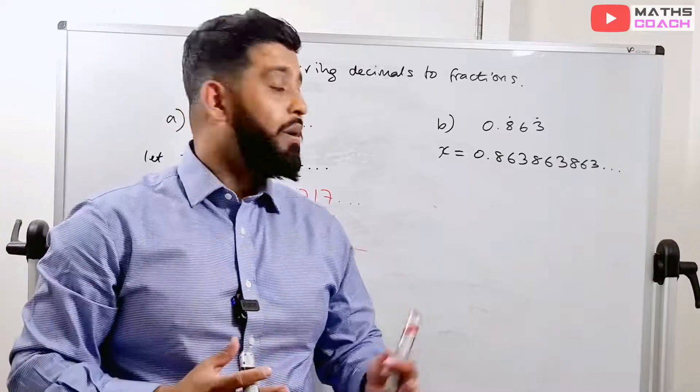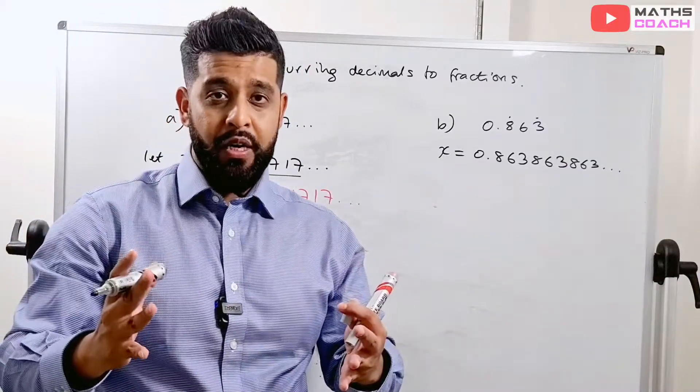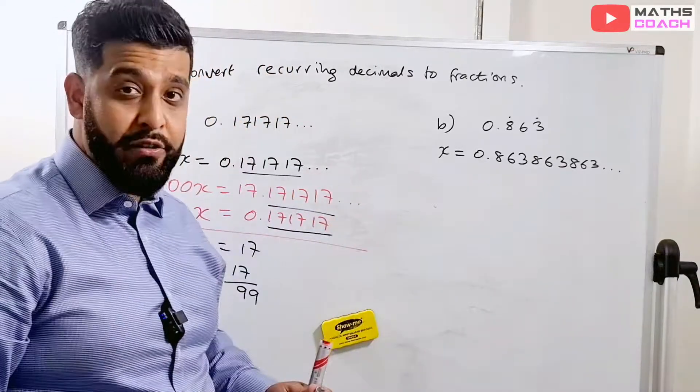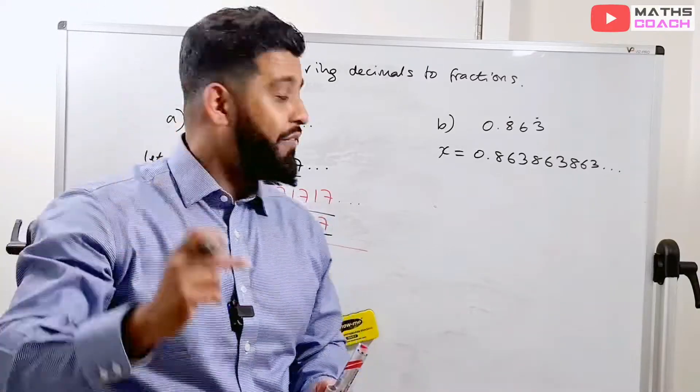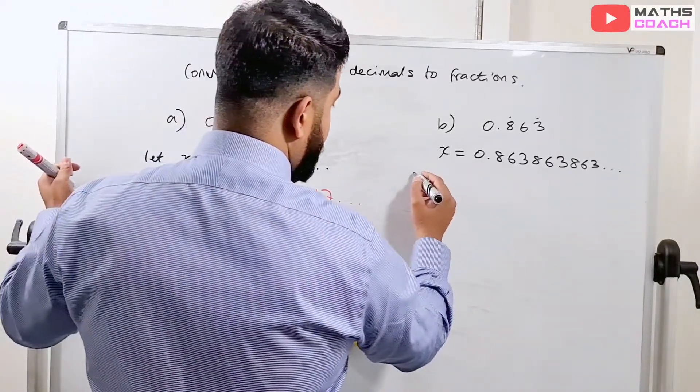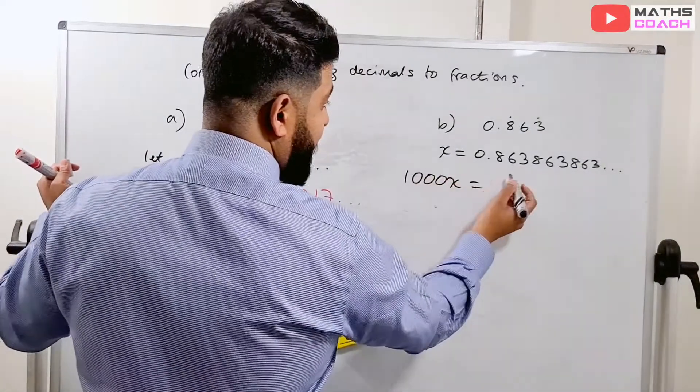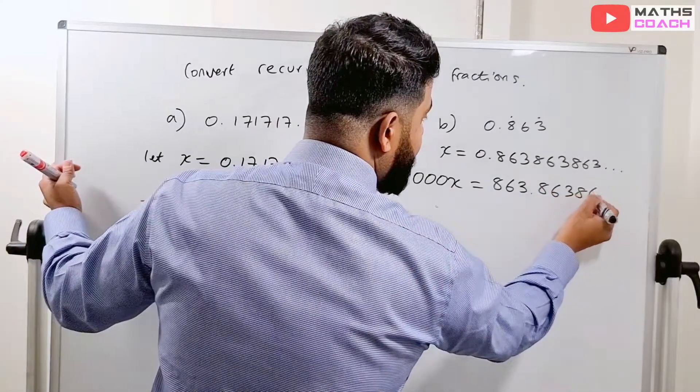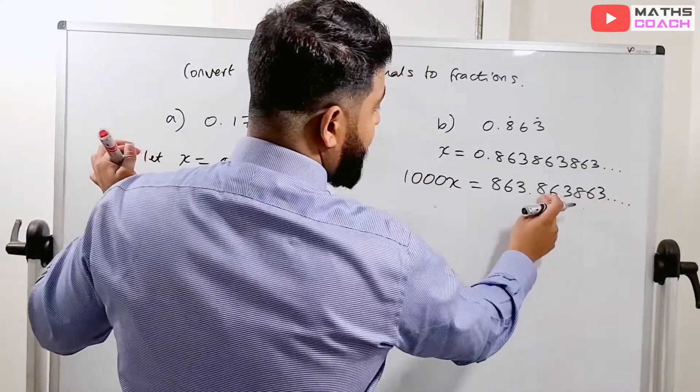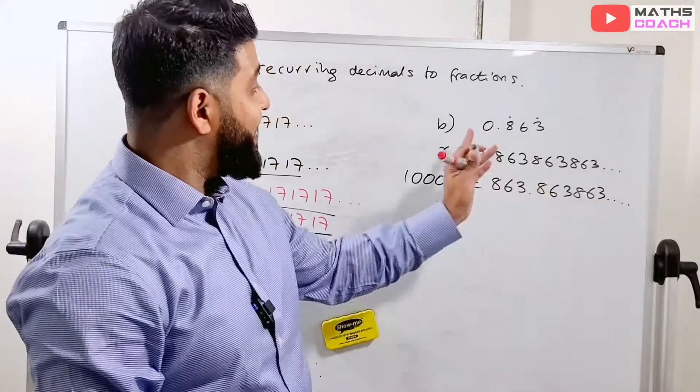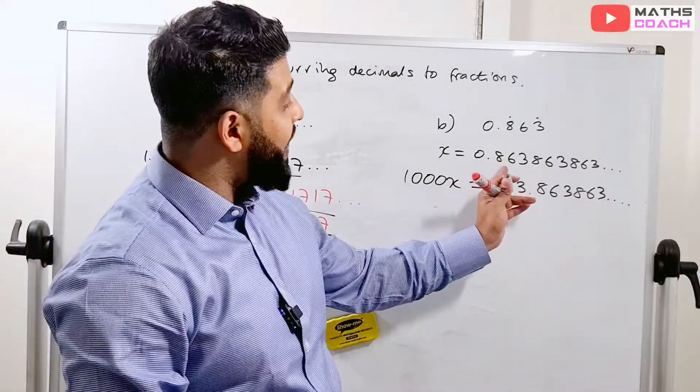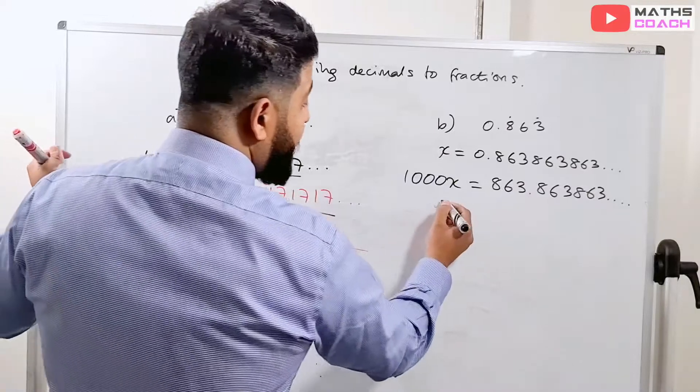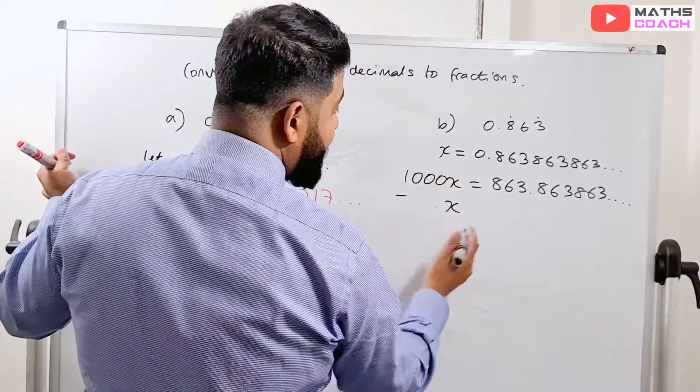And we want to take all the three numbers onto this side of the decimal place. So what would we have to multiply the x with this time? Think about it in your heads. 1,000. I'm hoping that you're sitting there thinking 1,000 because that's exactly what we have to do. So if we get 1,000x now, so we've multiplied by 1,000. We get 863.86386386 so on and so forth.